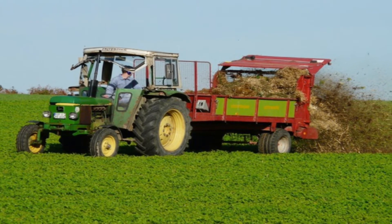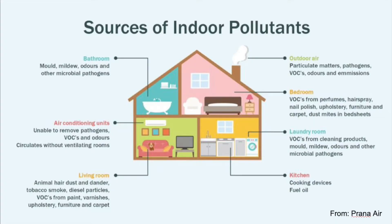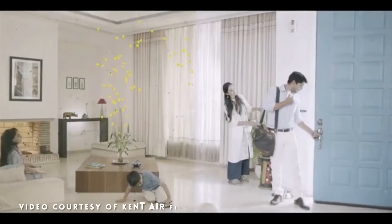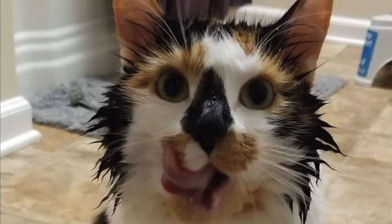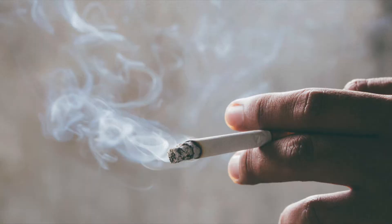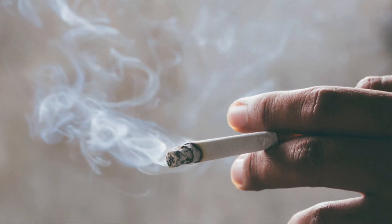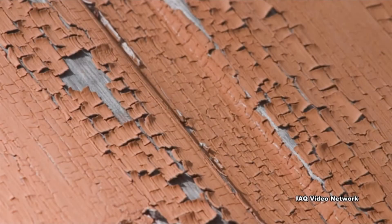Fertilizers and pesticides people use on the crops can cause air pollution too. Here are some sources of indoor pollutants: in the bathroom there's mold, mildew, odors, and other microbial pathogens. In air conditioning units, air circulates without ventilating rooms. In the living room, sources include animal hair, dust, dander, tobacco smoke, diesel particles, paint, varnishes, upholstery, furniture, and carpet.